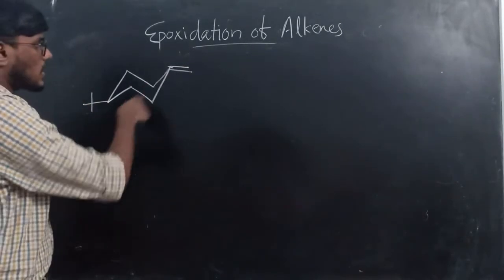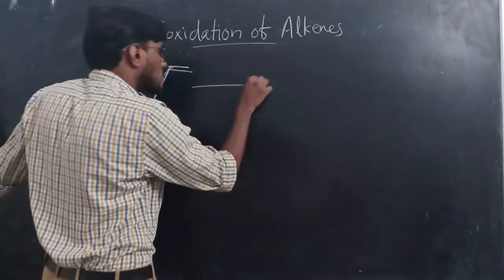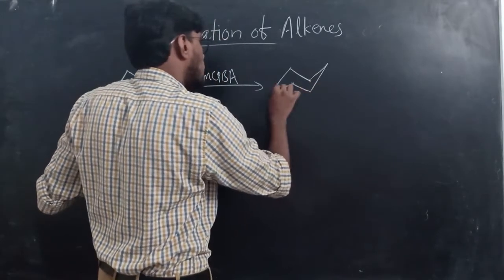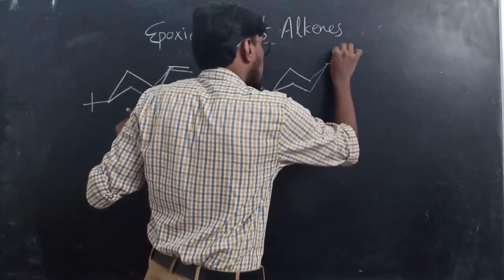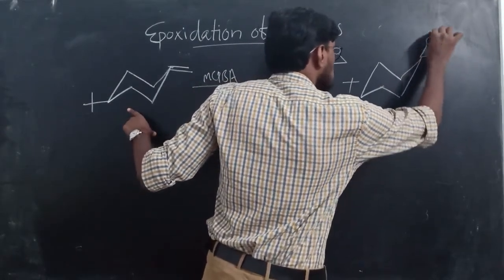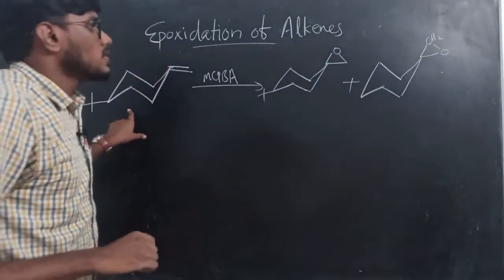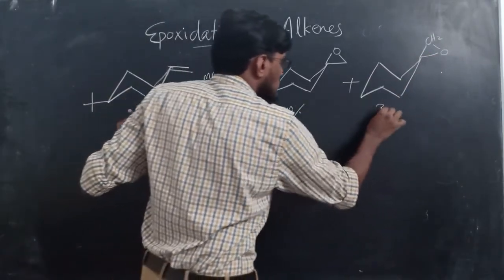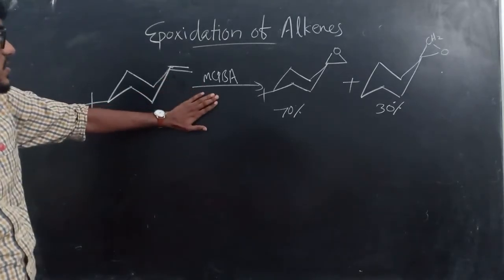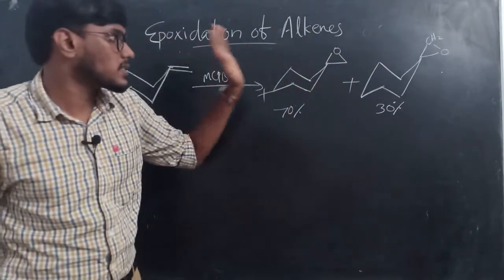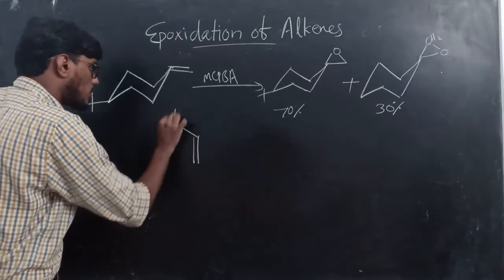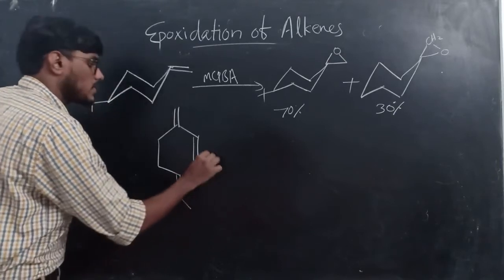Another example: 4-tert-butylmethylenecyclohexane on reaction with metachloroperbenzoic acid gives two stereoisomeric products. One product is formed in about 70% yield and the other in about 30% yield. This is because the exocyclic double bond is less hindered, and the peroxy acid attacks from the less hindered face, giving the major product.